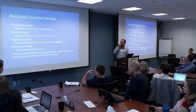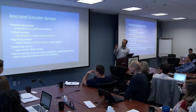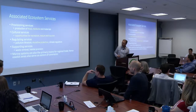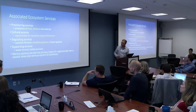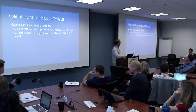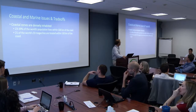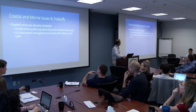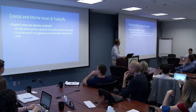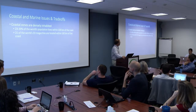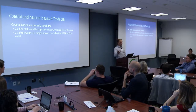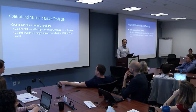Think about what we do know — it's pretty much the low-hanging fruit that we've been able to value thus far. We really need much more work in the regulating and supporting service area; it's harder to do, that's why we haven't done it. Coastal zones are densely inhabited — somewhere between 23 and 40% of the world's population lives within 100 kilometers of the coast, and 21 of the world's 33 megacities are within 100 kilometers of the coast, and almost all those are growing. So the pressures are increasing.